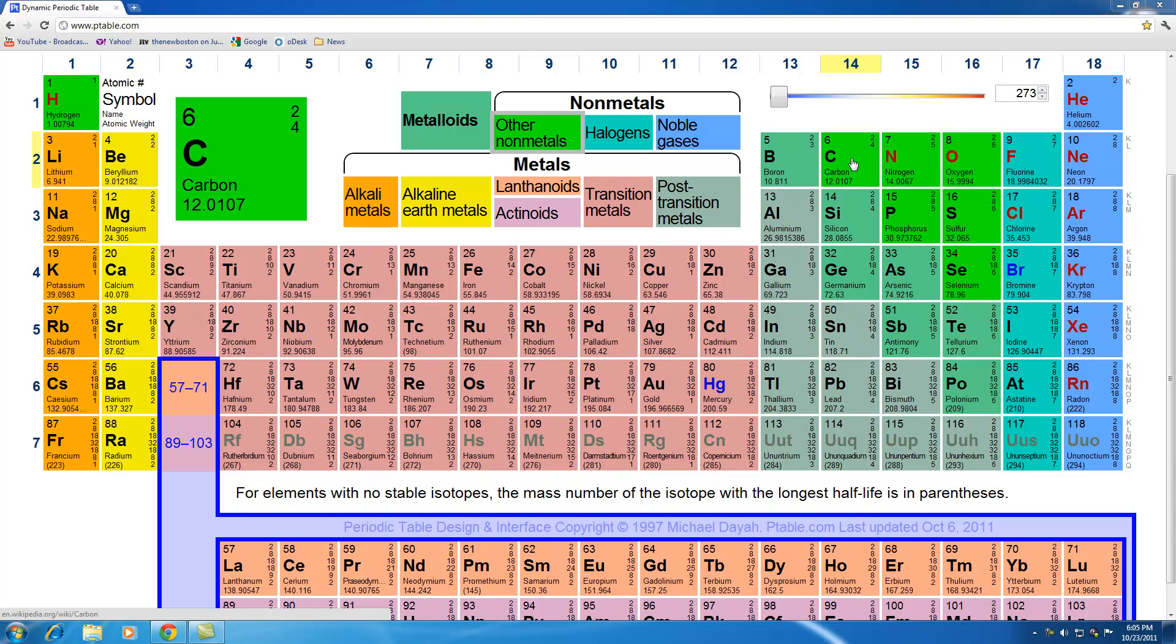Hey, who wants to write the entire name all the time? We got things to do, we don't have time for that. Now under that is the name, in this case it's carbon. Now under that, the number in the bottom left, in carbon it's 12.0107, this is called the atomic mass.